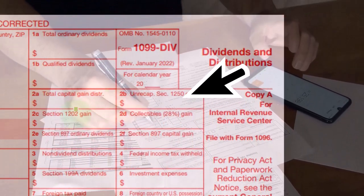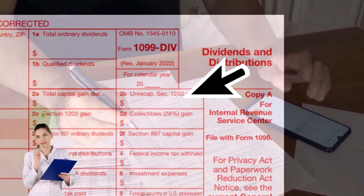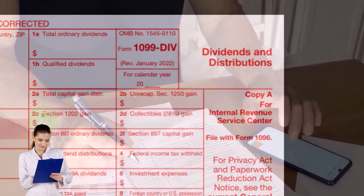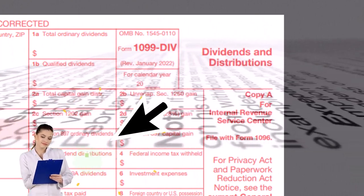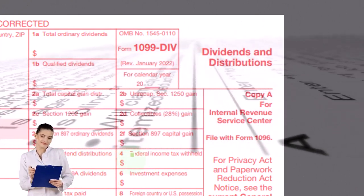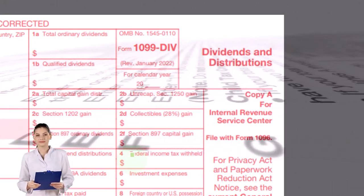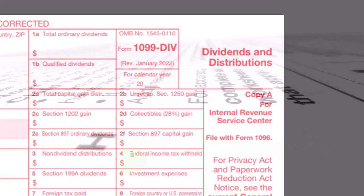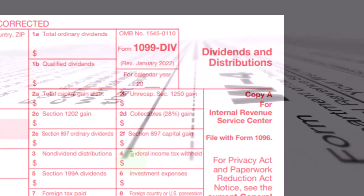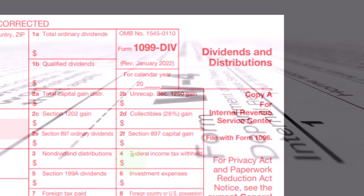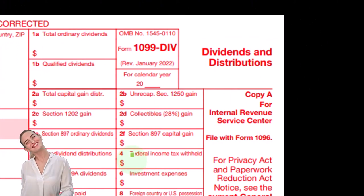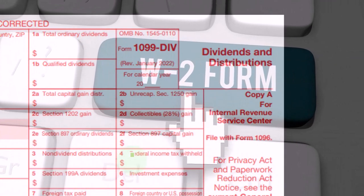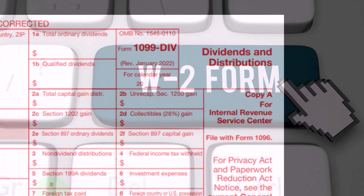There's also Unrecaptured Section 1250, Section 1202 gain, collections, Section 897 ordinary dividends, Section 897 capital gains, and non-dividend distributions — most software will help populate these if applicable. Then there's federal income tax withheld. Oftentimes you wouldn't be withholding from dividend distributions for most people, but if you're in retirement you might request withholdings similar to W-2 withholdings as a form of payment, though it's much less common here than with W-2 or retirement plan distributions. Also Section 199A dividends.